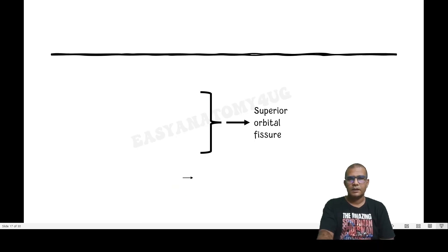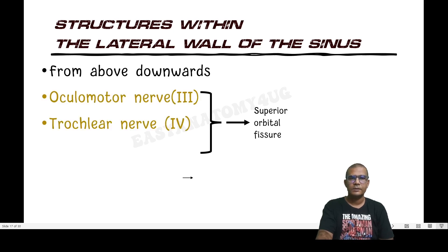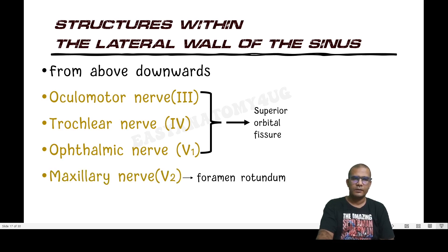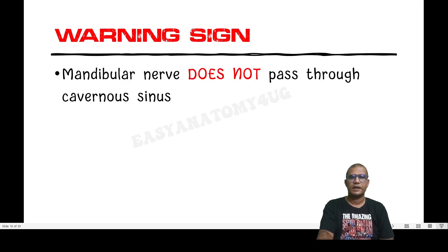Let us discuss the structures in the lateral wall of the cavernous sinus, named from above downwards: oculomotor nerve (cranial nerve 3), trochlear nerve (cranial nerve 4), and ophthalmic nerve (V1, a branch of trigeminal nerve). All three enter the superior orbital fissure. The lowermost structure in the lateral wall is the maxillary nerve, which moves anteriorly and enters the pterygopalatine fossa via foramen rotundum. A common mistake is writing mandibular nerve — the mandibular nerve does not pass through the cavernous sinus; it exits through foramen ovale below the endosteal layer.